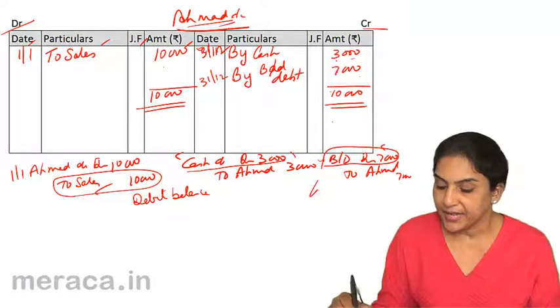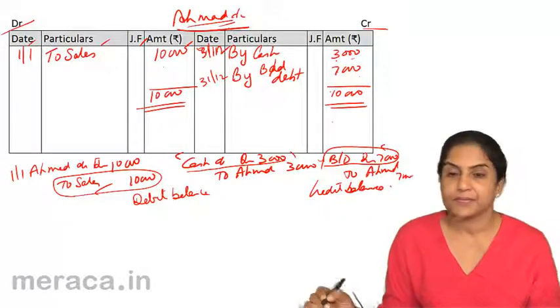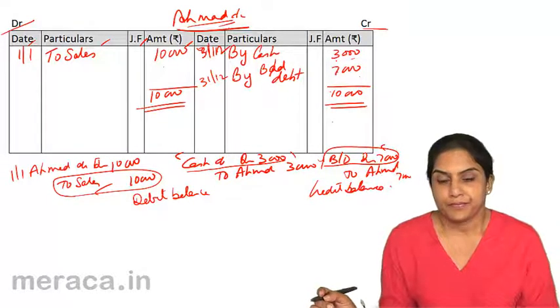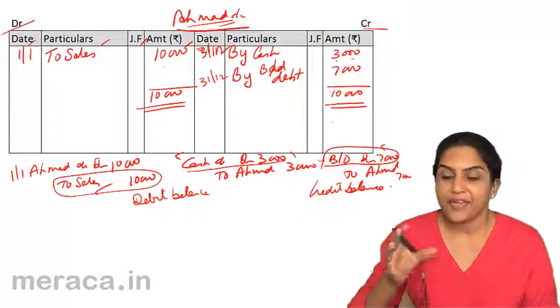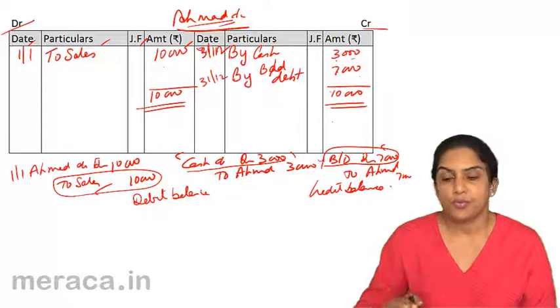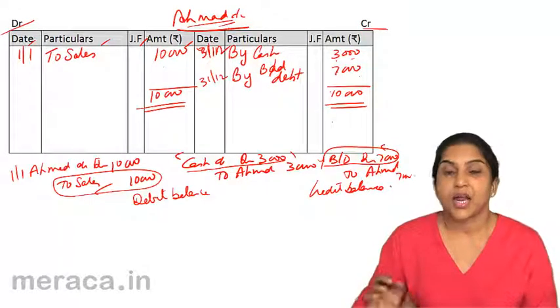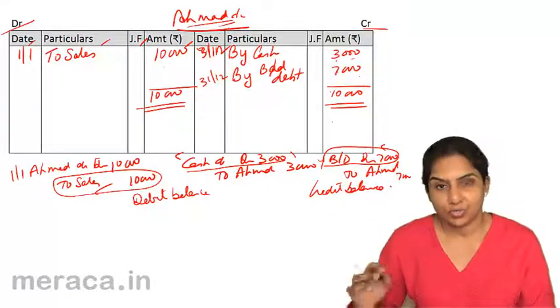And when the credit side is more, we say it's a credit balance. Let us post some transactions and then we will understand how accounts are balanced, how accounts are totaled.